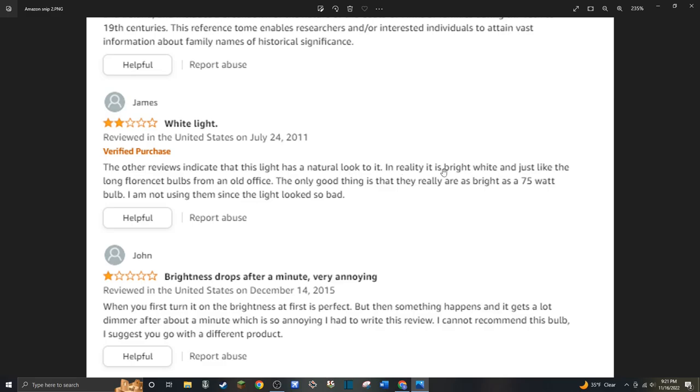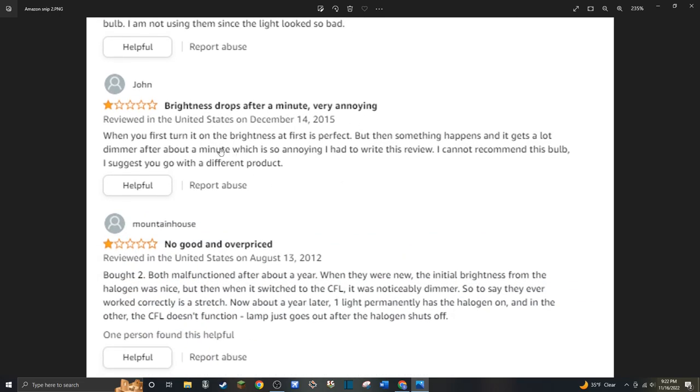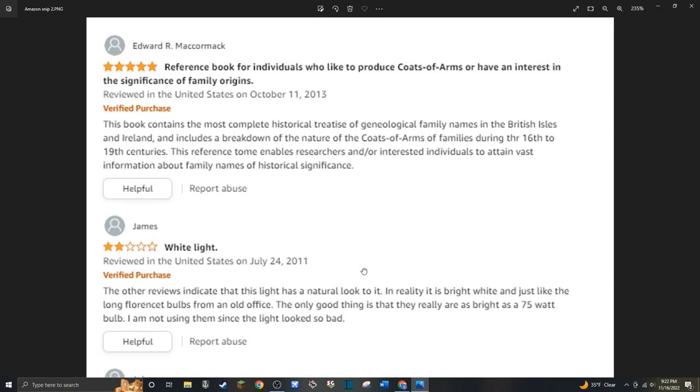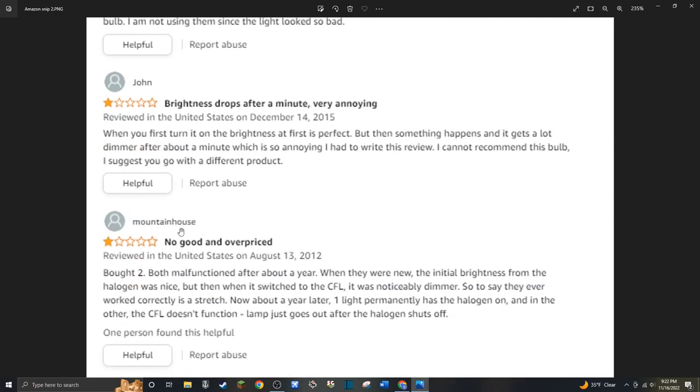Now, this guy here, despite having the world's lamest title, White Light, he's saying, indicates that it has a natural look to it. In reality, it's bright, looks just like the long fluorescent bulbs from an old office. And I agree with that, completely. The phosphors are a letdown. I think it's a great bulb. Otherwise, they just didn't quite have the phosphors at an acceptable point at this time. And so the color and color rendering index is not that great. This guy actually says he's not using his $24 light bulbs because the light looked so bad. This guy had an issue with the slow warmup. I don't think that deserves one star myself, but okay. And finally, this guy said, well, they both broke. And again, I think some of these guys don't really know what they're doing here because he says, well, one light permanently has the halogen on. Well, there's no halogen. These are CFLs. So I don't know. We got Edward talking about books and we got Mountain House talking about halogens.